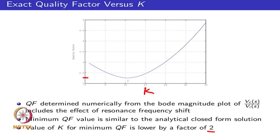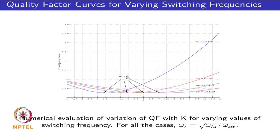Making use of this factor of 2, one can evaluate designs at different switching frequencies. What is shown is the point of minimum quality factor versus k for power converter designs where the switching frequency ranges from close to 10 kHz to 2.25 kHz. For this practical range of switching frequencies, the exact quality factor minimum consistently occurs at k equal to half ω_r/ω_fu — so this selection coincides with the minimum quality factor across practical switching frequency choices.